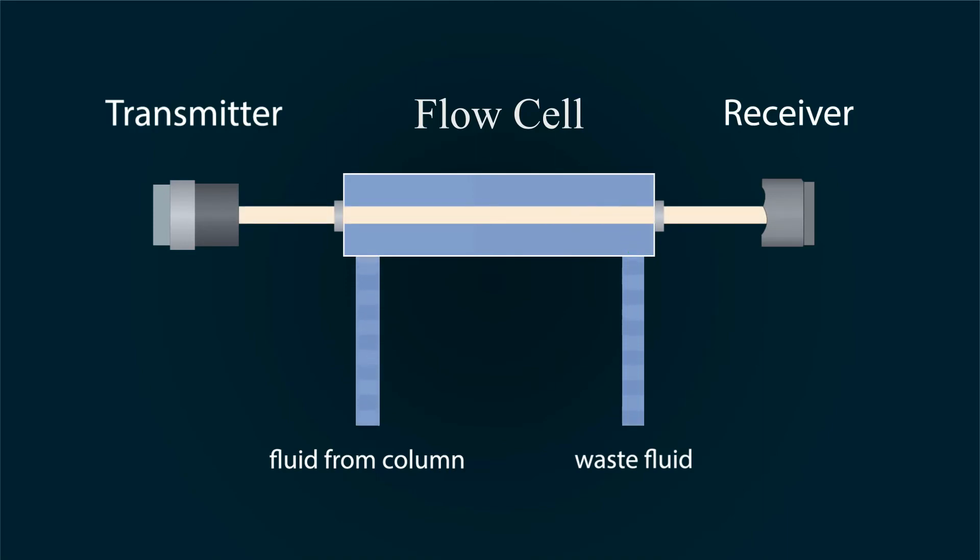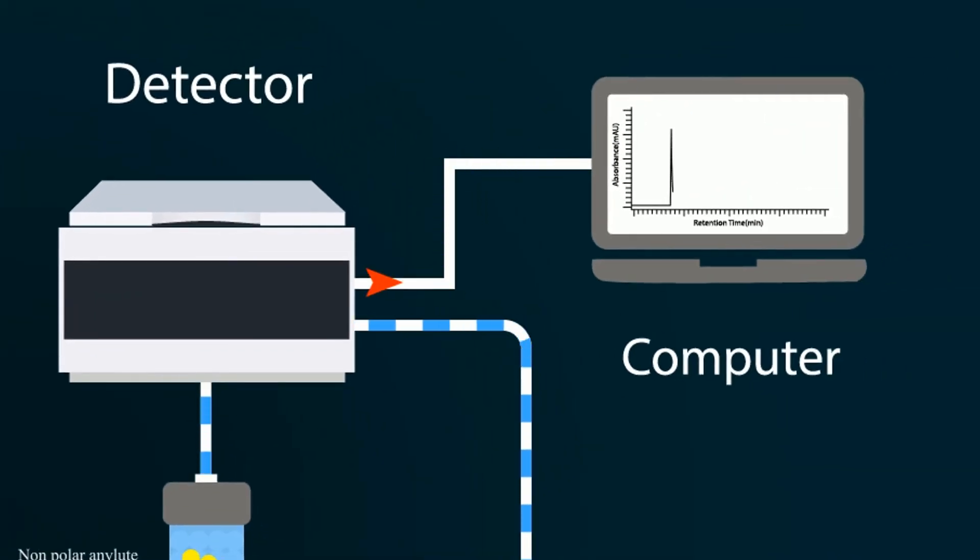Then the waste fluid is moved towards the waste water bottle. The receiver got the reading and gave it to our computer screen. The readings are recorded in computer in terms of graphs and peaks.